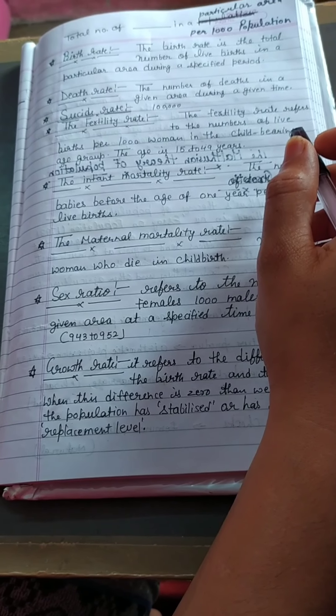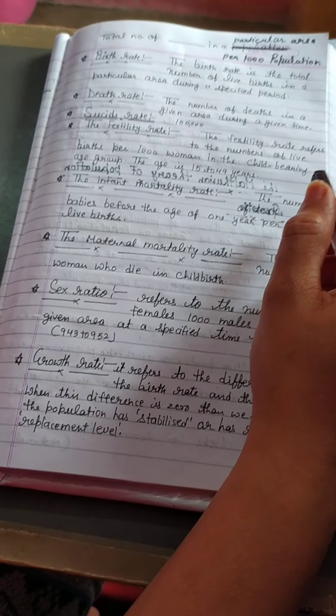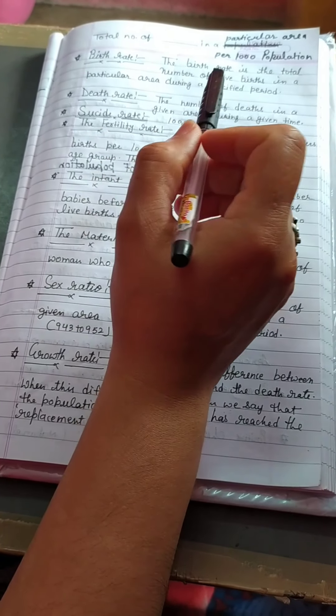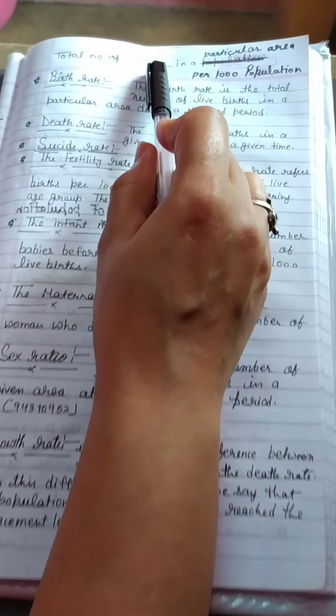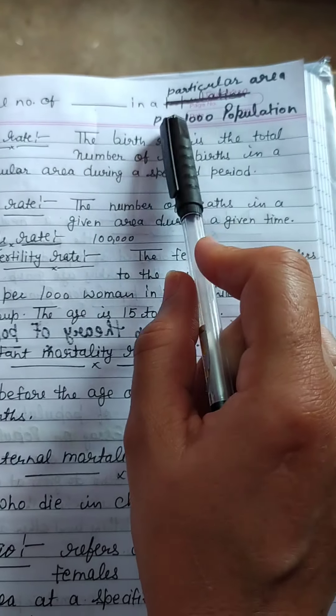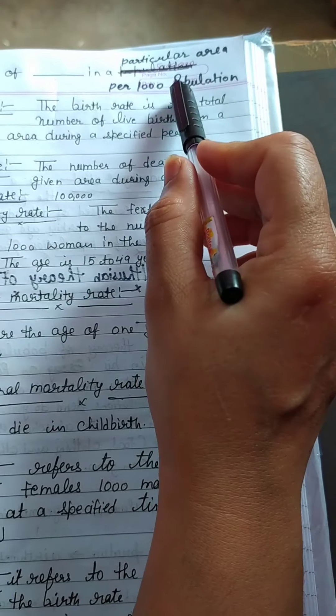So, I think through this video you understand the birth rate and death rate clearly. Now, suicide rate. Suicide rate - total number of suicides in a particular area per 100,000 population.